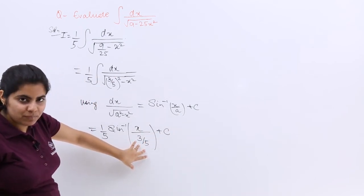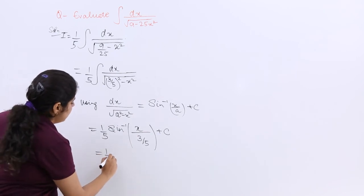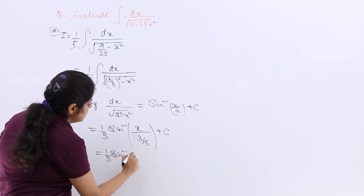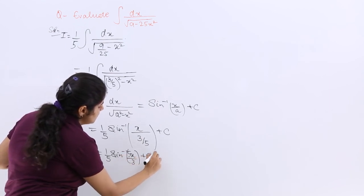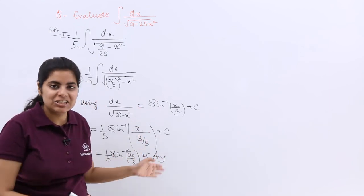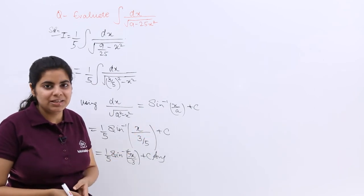this 3 by 5 is looking a bit odd. So let me write 1 by 5 sine inverse 5x by 3 plus c. And that is your answer and you definitely know how did I obtain it.